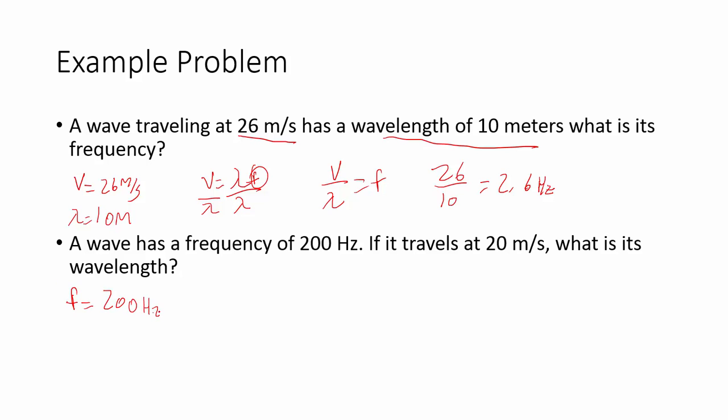Frequency, 200 hertz. Travels at 20 meters per second. That's a velocity. What is its wavelength? Wavelength is my unknown. V equals wavelength times frequency. 20 equals 200 times wavelength. Divide both sides by 200. And I get a wavelength of 0.1 meters.